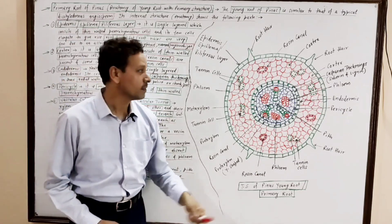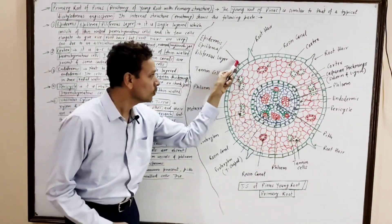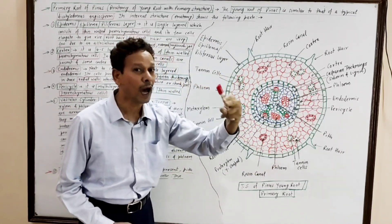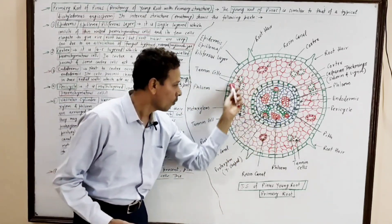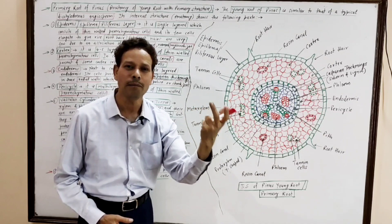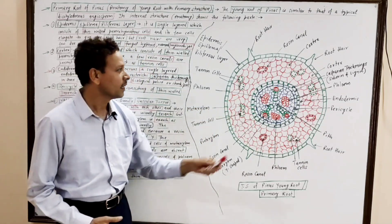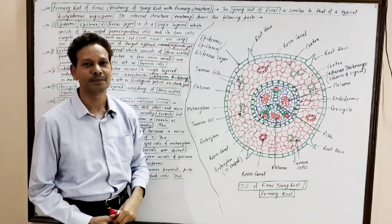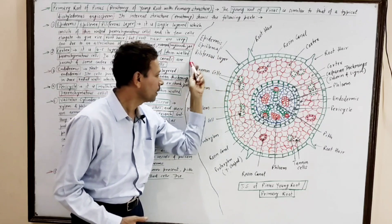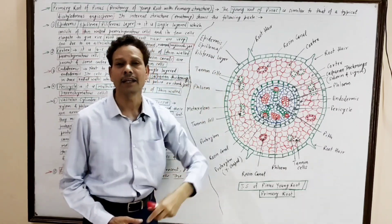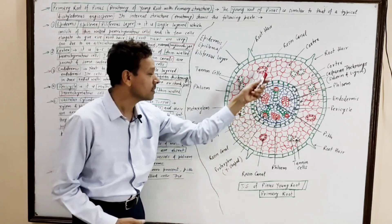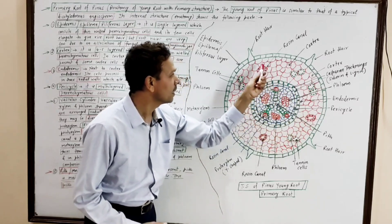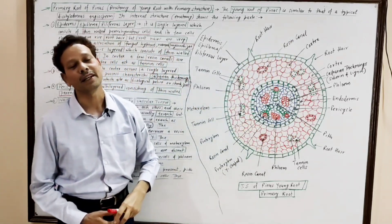The next part is the cortex. Next to the epidermis, there is a multilayered cortex, generally four to five layers. The cortex cells are thin-walled parenchymatous. A few cortical cells act as tannin cells because they secrete tannin. Also present in this cortex are resin-secreting canals.